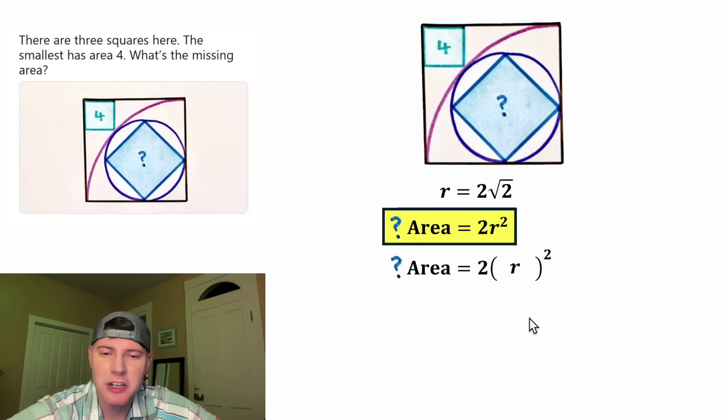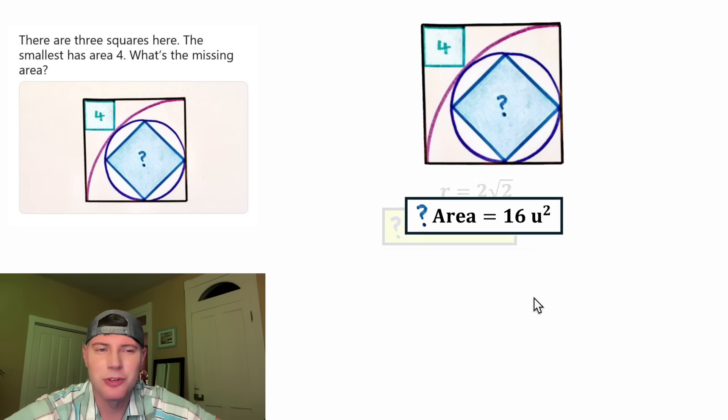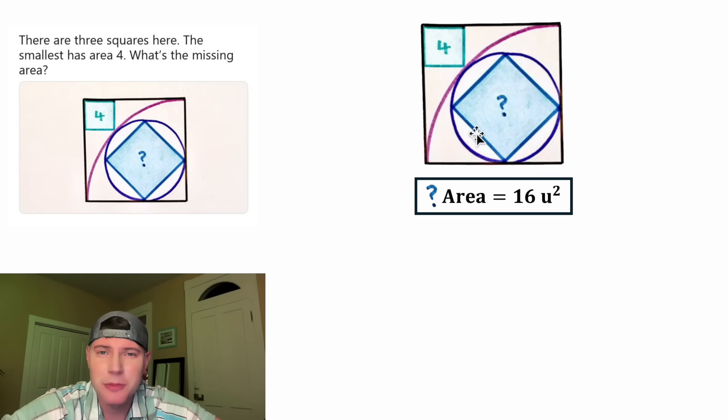In the place of the r, let's plug in two root two. So now we have two times two root two squared. That's a lot of twos. And then this squared is going to distribute to each of these terms, giving us two, two squared, square root of two squared. Two squared is equal to four. And this square root and this square will cancel each other out. And two times four times two is equal to 16. Let's give it a label of units squared and put a box around it. This is the answer to our question. The area of the question mark squared is equal to 16 units squared. How exciting. I think this was a fun one. It took a lot of different geometry and algebra skills.